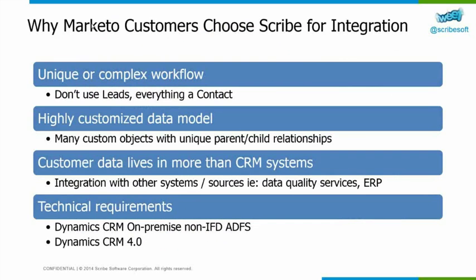So why would a Marketo customer, when they can get native integration from Marketo, choose to work with a product like Scribe? We find that these customers' needs really fall into four categories. The first is around unique or complex workflow. It may be that your organization doesn't use the standard leads object for leads — it actually uses a custom entity, or everything is treated as a contact. As you may know, the native integration would be very difficult to support that type of scenario and would certainly take custom code. With Scribe, that would be a configurable adjustment you could make to the integration.